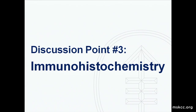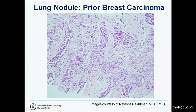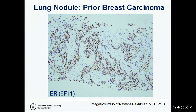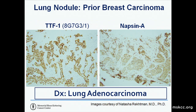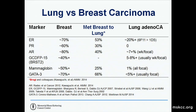The third learning point is immunohistochemistry. Here's another case of a lung nodule in a patient with prior breast carcinoma. Based on H&E morphology it looks like a carcinoma, but I can't say if it's lung or breast. It is positive for ER, and the patient has a history of prior breast carcinoma. However, it is also positive for TTF-1 and napsin-A. The diagnosis is lung adenocarcinoma, and the learning point is that lung adenocarcinomas can stain with ER — in fact, up to 20% of lung adenocarcinomas can be ER positive.